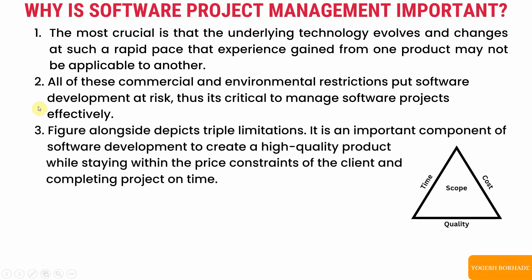The third point depicts the triple constraint triangle, which has three constraints: quality, cost, and time. These three are dependent on each other. If you want to develop a high-quality product, you'll add more features and more security, which results in higher cost and more time required. It is an important component of software development to create a high-quality product while staying within the client's budget and completing the project on time.